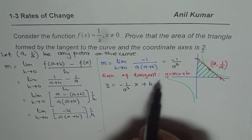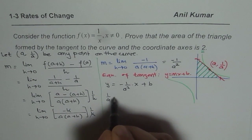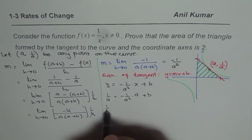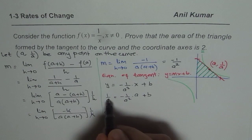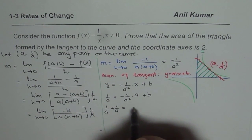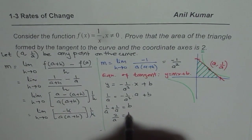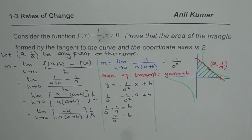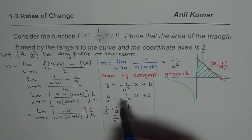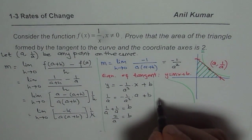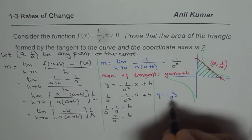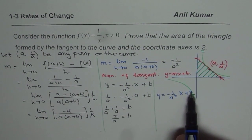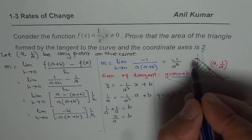To find the y-intercept b, we use our point (a, 1/a). Substituting: 1/a = (−1/a²)(a) + b, which gives 1/a = −1/a + b. Bringing −1/a to the left: 1/a + 1/a = b, so b = 2/a. Now we can write the full equation of the tangent as y = (−1/a²)x + 2/a. So the y-intercept is 2/a.